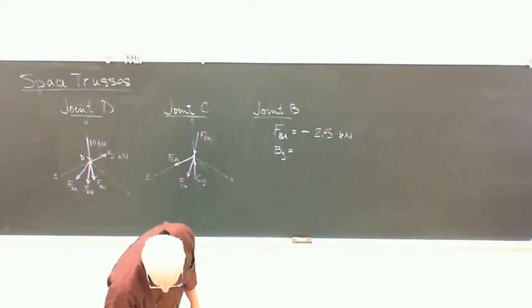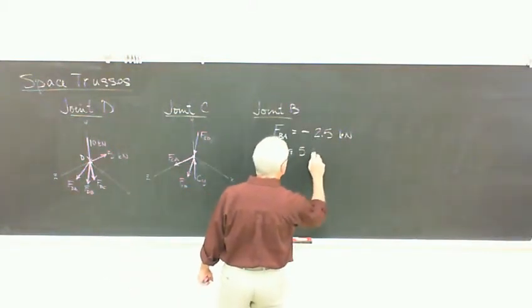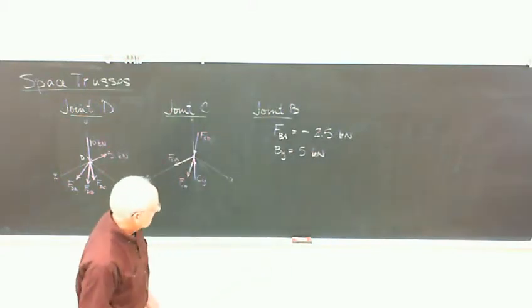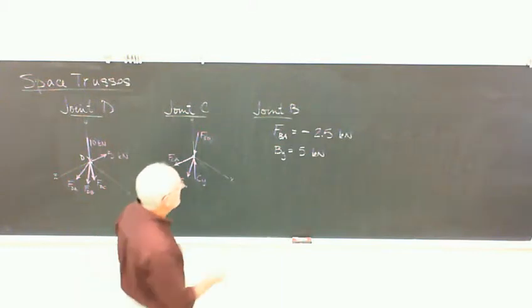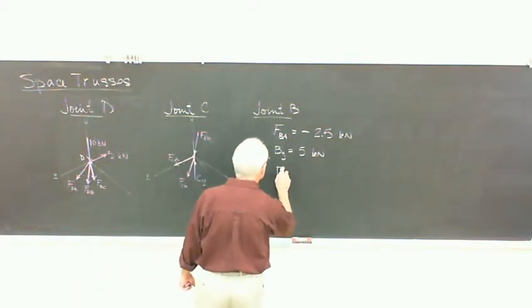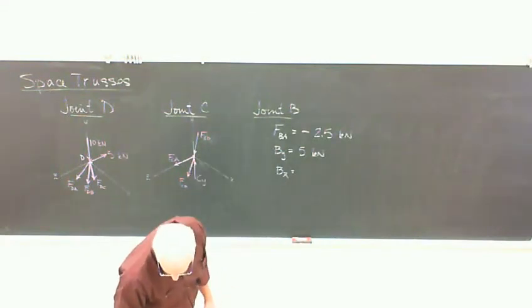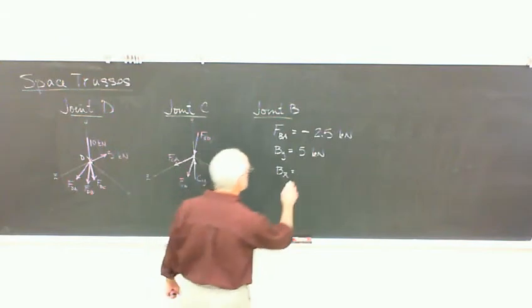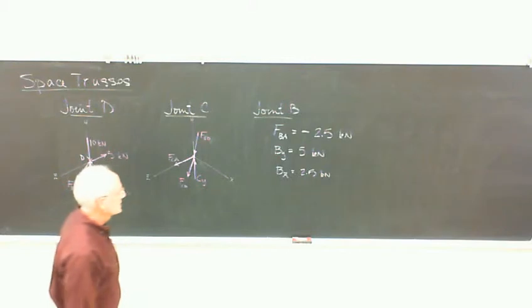BY we assume is an upward support reaction and that gets confirmed. And remember that was the joint that was doubly supported so there's a Z reaction as well. I assumed it to be positive and that's what it comes out to be in the positive Z direction.